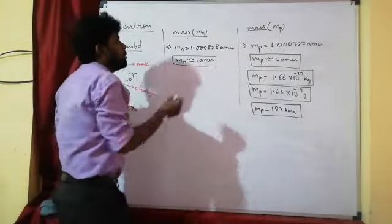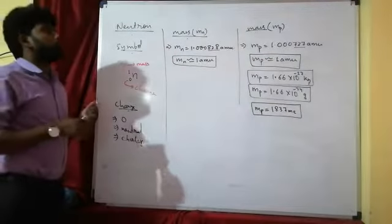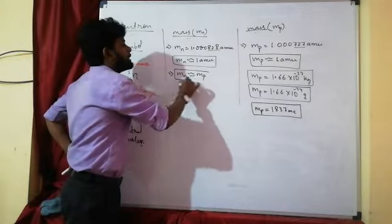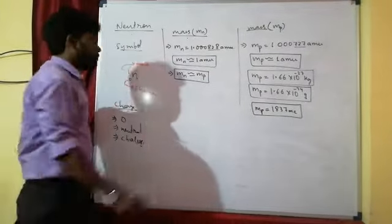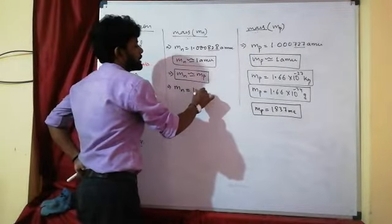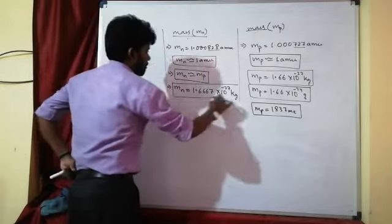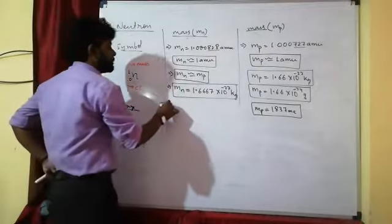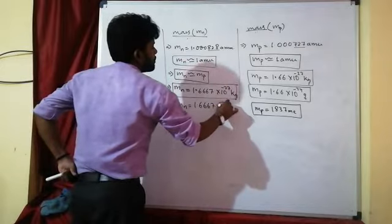The mass of the neutron is 1.000828 amu, which means the mass of neutrons is almost equal to the mass of protons — just slightly more. In kilograms, it is 1.6667×10⁻²⁷ kg, and in grams it is 1.6667×10⁻²⁴ g.